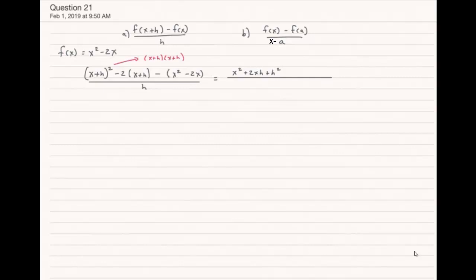Continuing on, we need to use the distributive property for both next terms. And now we can see that a couple of things add to zero: x² minus x² is zero, and -2x and +2x add to zero.